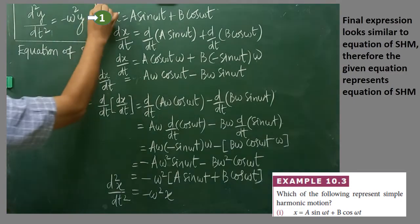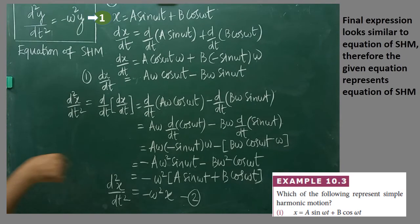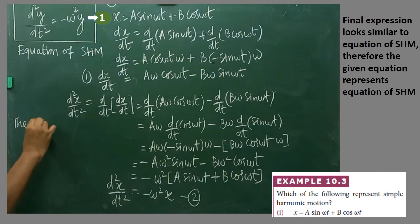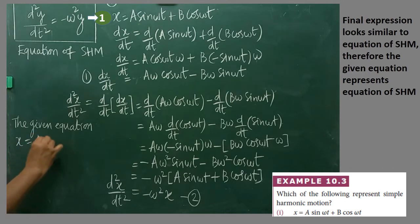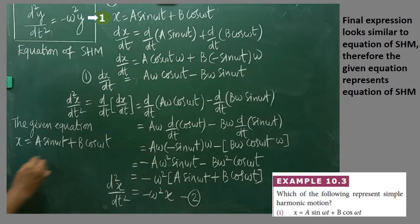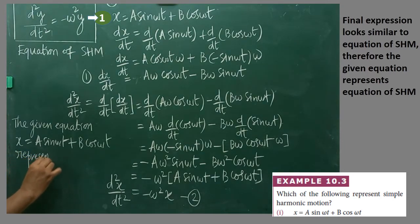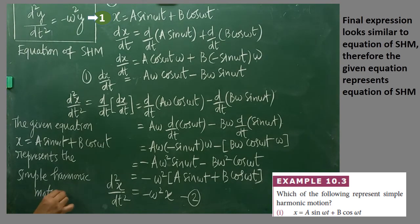Therefore, we conclude that by comparing equations 1 and 2, both are looking similar. The given equation x = a sin(ωt) + b cos(ωt) represents simple harmonic motion (SHM). Three more similar problems are given in the textbook, and we can solve them one by one.